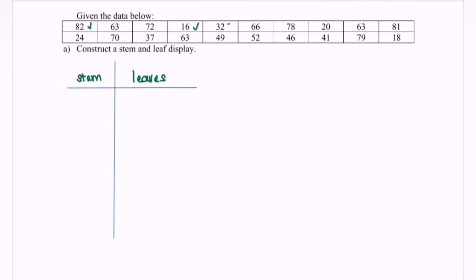We have 16 as the minimum, so we start from 1, 2, 3, 4, 5, 6, 7, and 8, because we have 82 as the highest value. Arrange all the scores in a vertical manner from the smallest score to the biggest score. The leaves are arranged in ascending order from left to right.